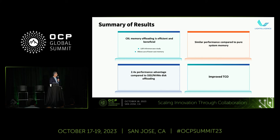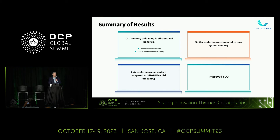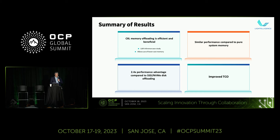In summary, we showed that CXL memory offloading is efficient and beneficial — similar performance at about 70% compared to system memory. Most importantly, a 2.4x performance advantage in throughput in tokens per second, and improved TCO.